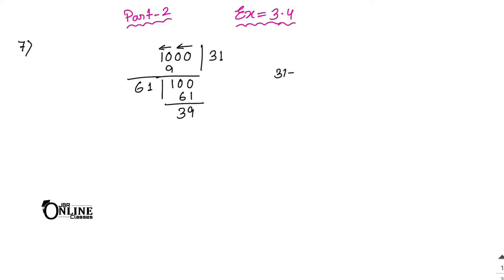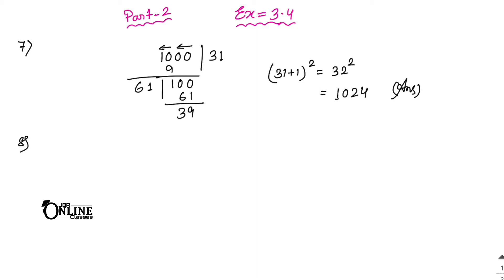Since the remainder is 39, the next perfect square greater than 1000 is 32 squared, which equals 1024. So 1024 is the smallest 4-digit perfect square number — that is your answer. Next, sum number 8: find the greatest 6-digit perfect square number.